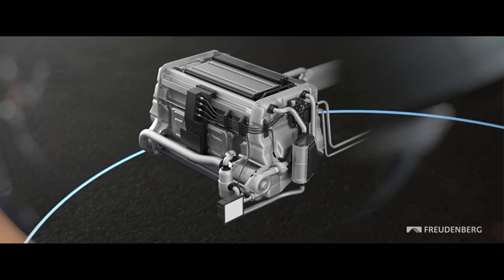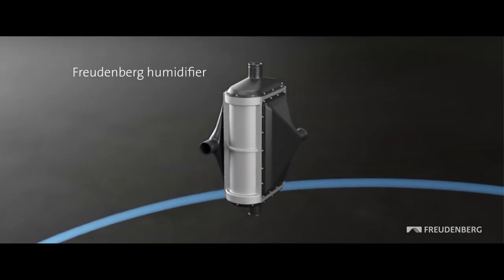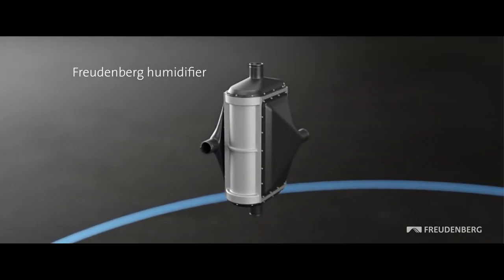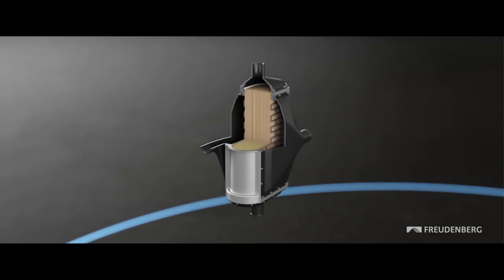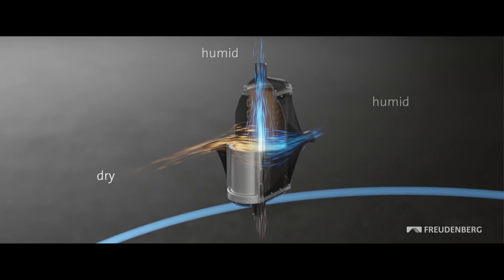The Freudenberg humidifier uses a passive, energy efficient process to humidify the air intake. Water vapor that the fuel cell produces as a byproduct humidifies the dry incoming air.